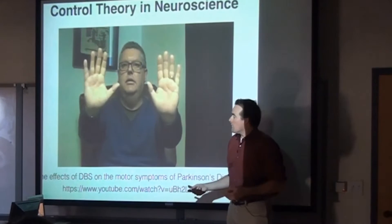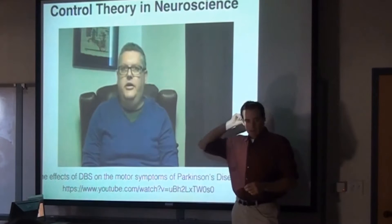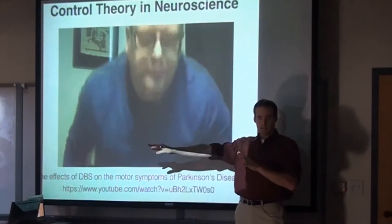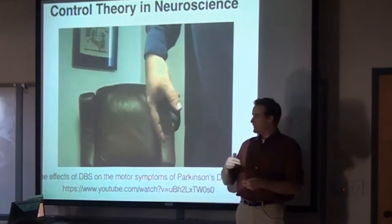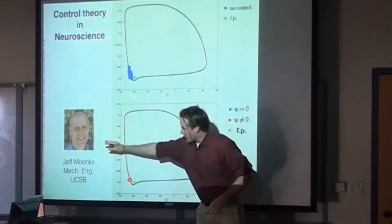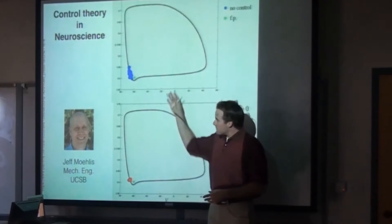As far as I know, this DBS system does not use sensors implanted in the brain — it just blindly applies a voltage signal. When a control engineer sees this, what they think is: I wonder if we could do better if we had some sort of feedback, if we had sensors from the brain measuring the voltage, the spiking of the neurons or whatever. That's precisely what a mechanical engineering professor at UCSB, Jeff Mollis, wanted to study.